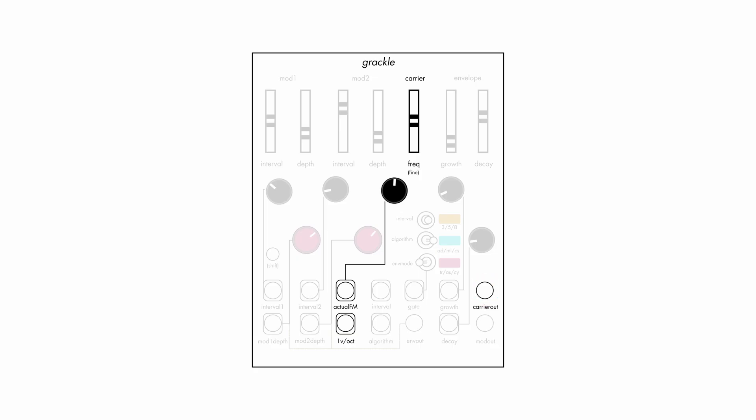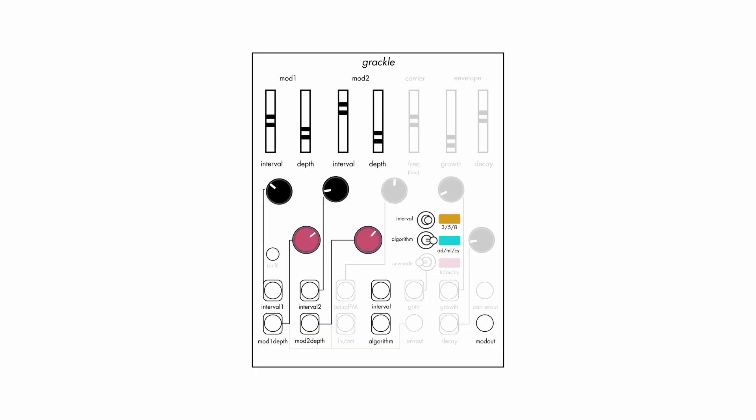Its frequency is mainly controlled by the frequency slider and the 1 volt per octave CV input. The mod 1 and mod 2 oscillators alter the timbre of the carrier oscillator through phase modulation, which changes the harmonic character while still retaining pitch accuracy.